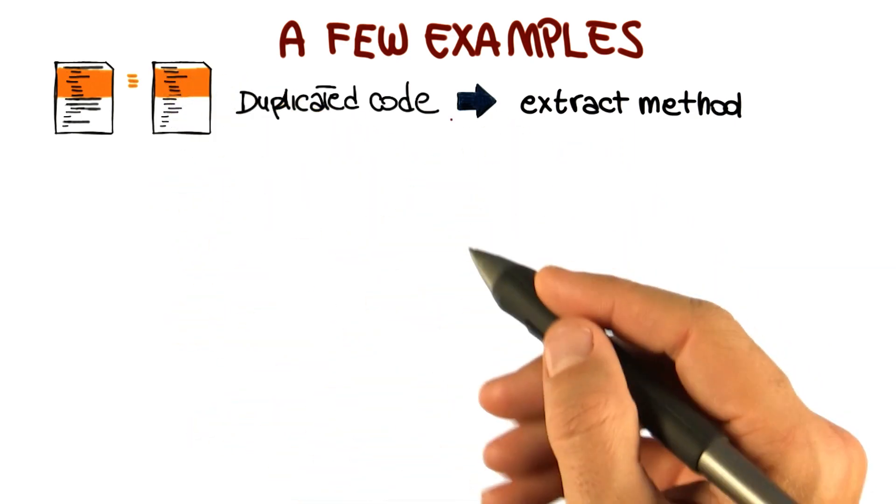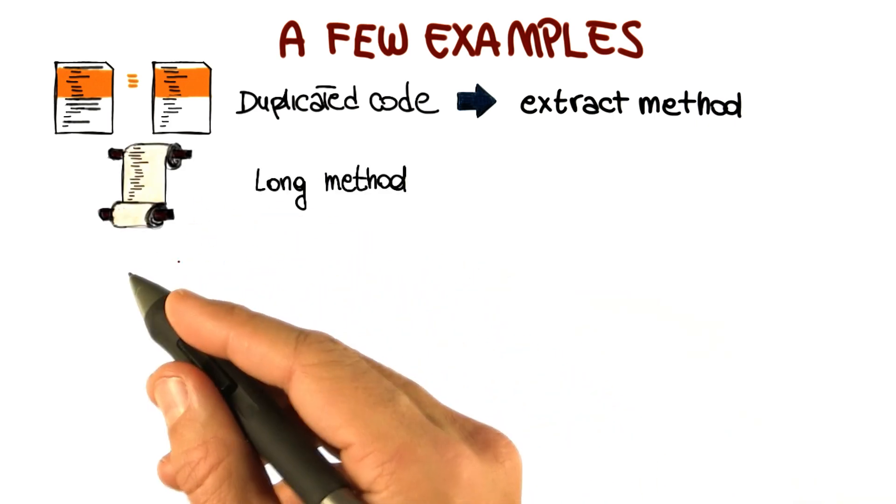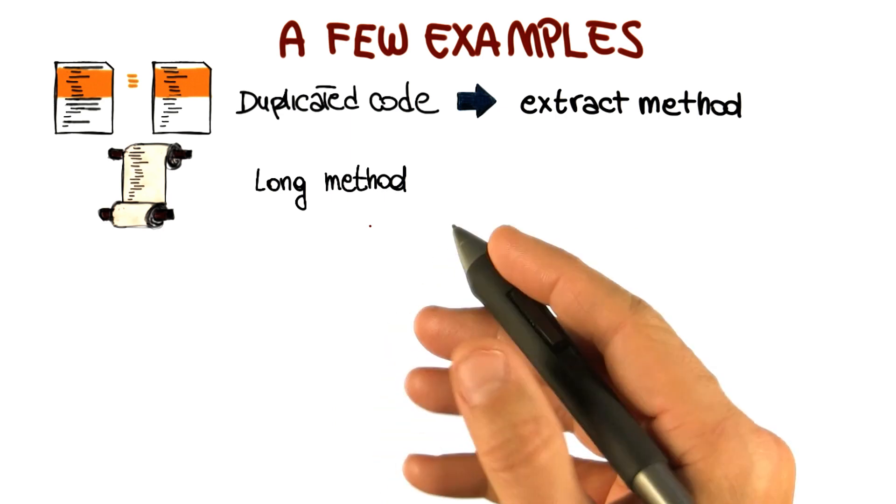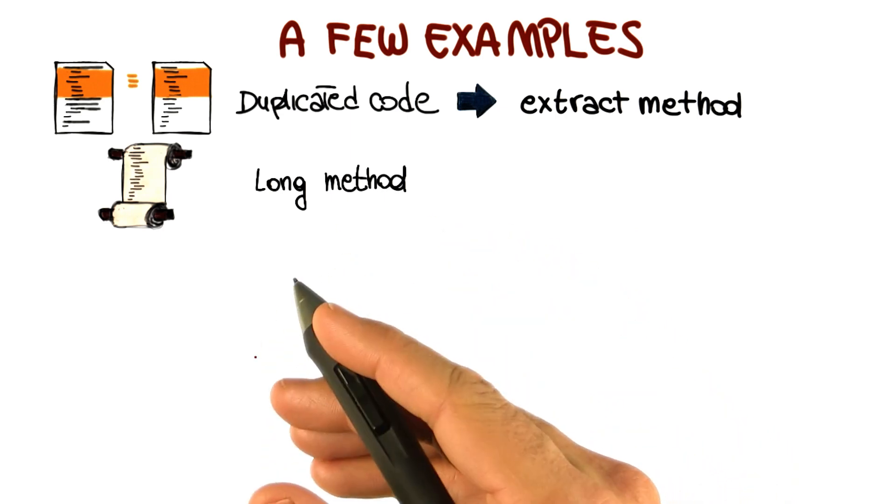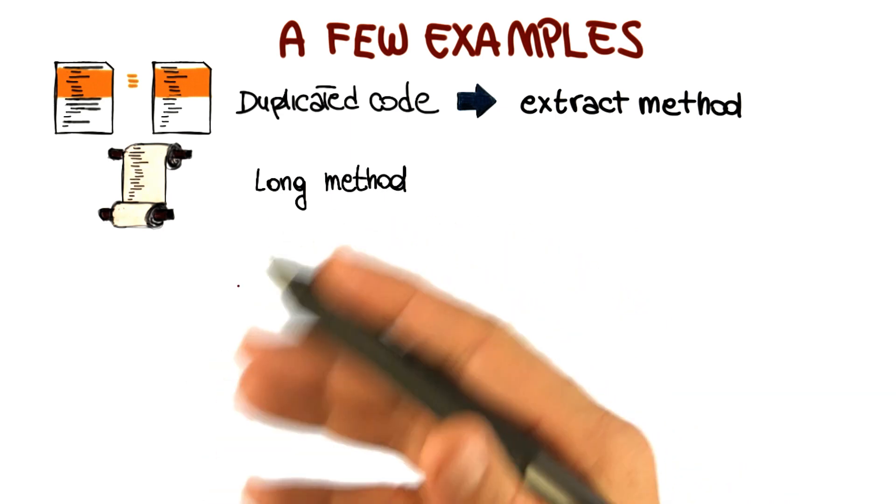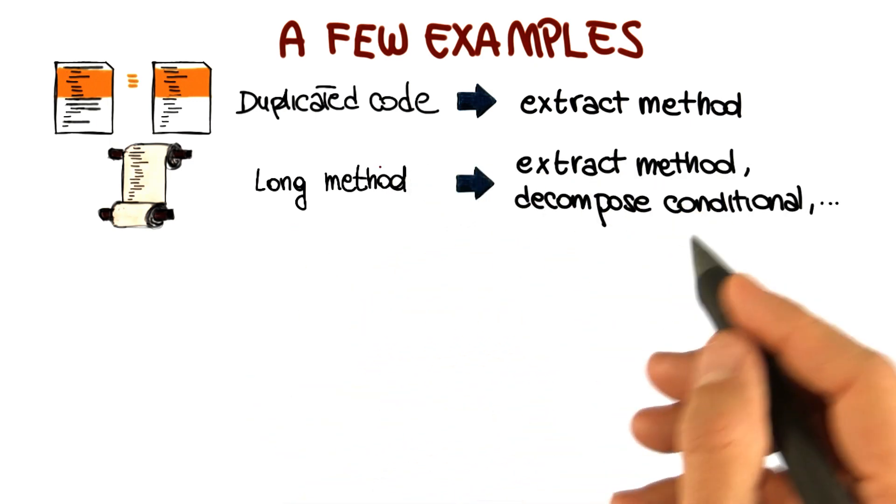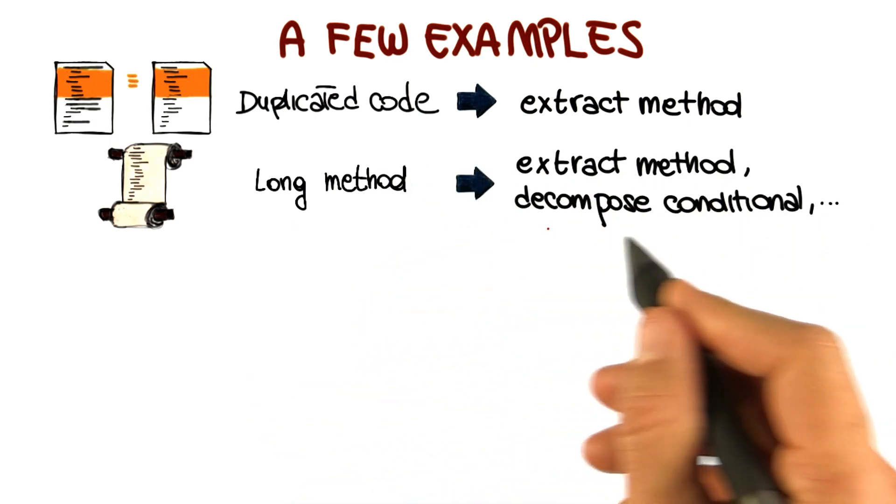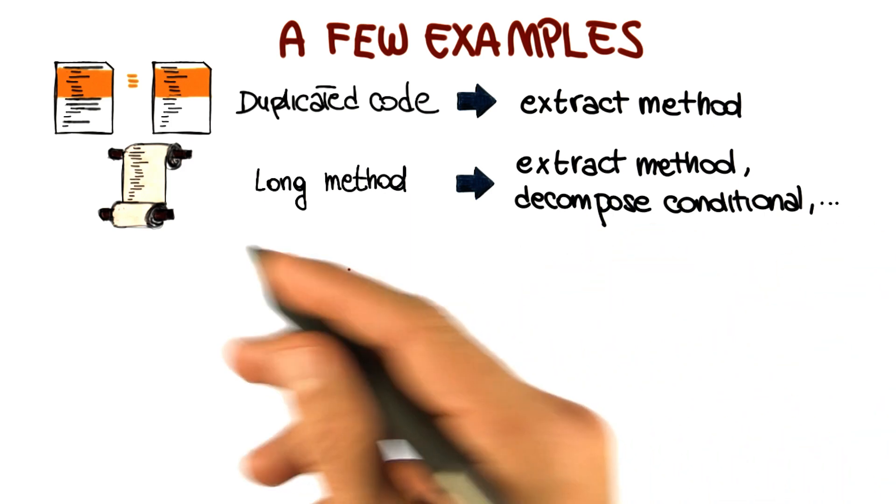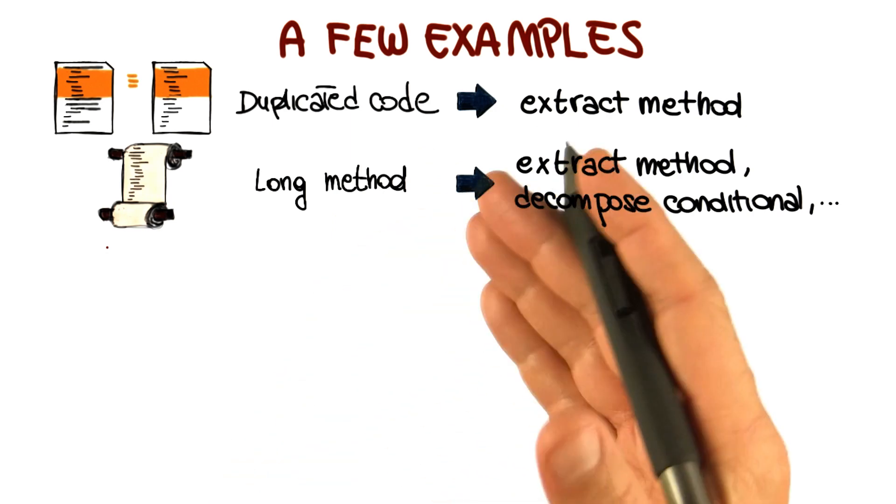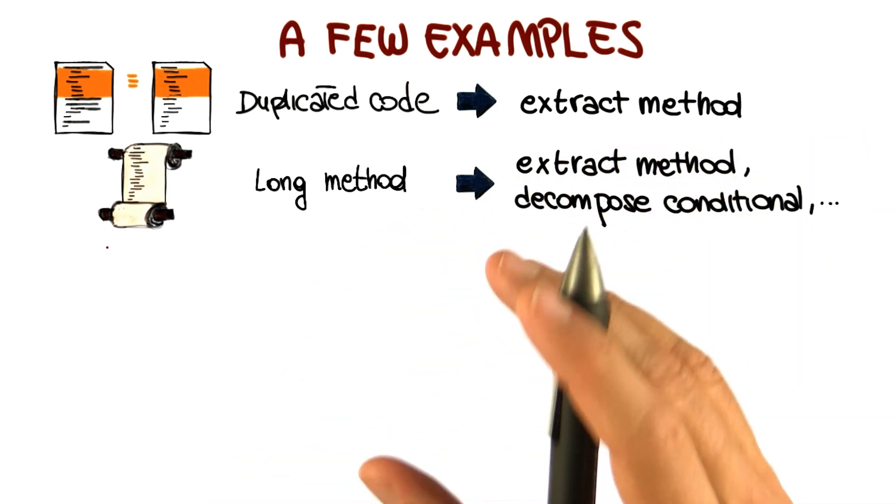Another example of bad smell, a typical one, is long method. So you have a very long method with a lot of statements, and we know that the longer a procedure, the more difficult it is to understand it and maintain it. So what I might want to do in these cases is to use refactoring such as extract method or decompose conditional to make the code simpler, shorten it, and extract some of the functionality into other methods. So basically break down the method in smaller methods that are more cohesive.